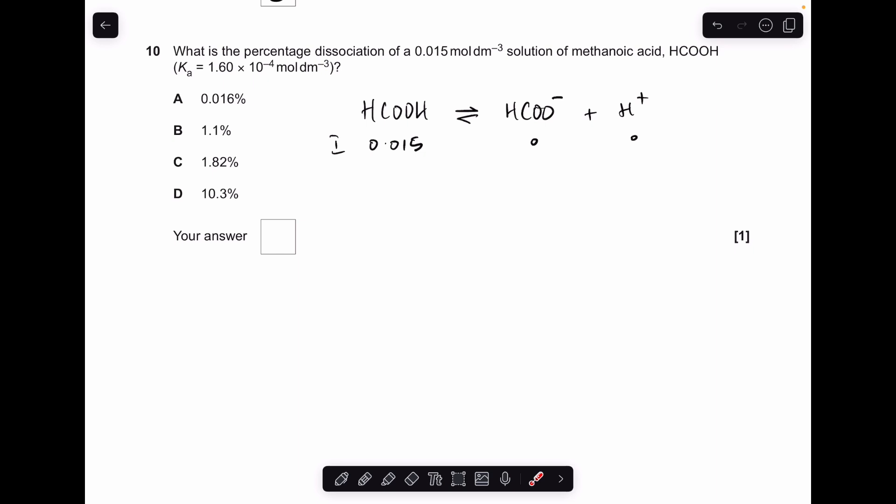Moving on to number 10. A little bit tricky this one. So there's the dissociation for methanoic acid and we're told it has a starting concentration of 0.015 moles per decimeter cubed. So the way we're going to do this is we're going to use the square root of Ka times HA equation to calculate the H plus concentration. And then we can compare that concentration with the start concentration of the acid and that will give us a measure of the dissociation. So H plus concentration comes out at that there. So percentage dissociation is the H plus concentration divided by the concentration the acid started at times 100, 10.3% answer D.